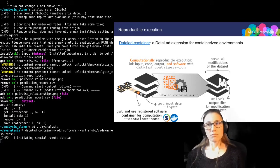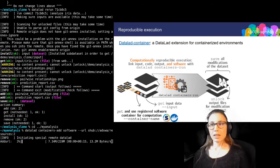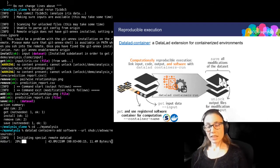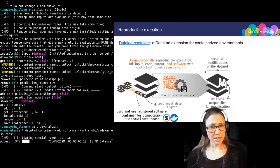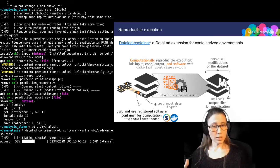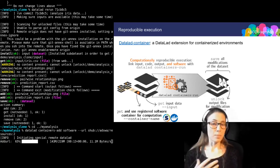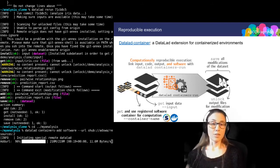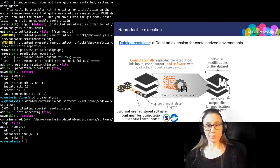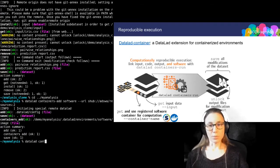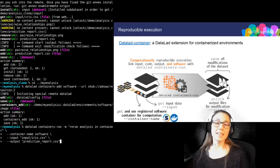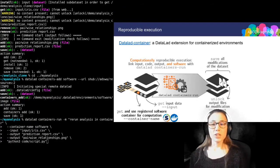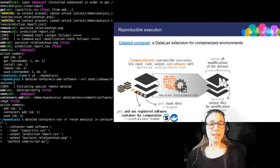Once I have attached a software container — you can see that it's currently downloading it — I can not only share this software container together with my dataset to include software as provenance and as a part of my data analysis, but I can also include information on the software container into a run command. I'm doing this with the datalad containers-run command, which works pretty similar to datalad run. It's just that I'm also attaching information on which container image to use — in this case, identifying it with the name 'software' that I have given it.